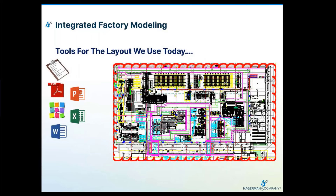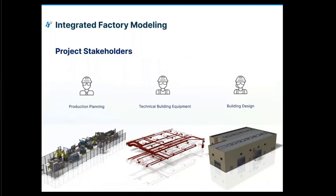Where we're at today, the tools we use for layouts are 2D — 2D prints in the shop, in the field, via email. We can use 3D PDFs, STEP files, SAT files, but those are not up to date — they're not live references back to the models. We still use Microsoft Word for inspection, paint, and maintenance manuals, handwritten notes, sticky notes, Excel for schedules, PowerPoint for presentations, as well as AutoCAD, Inventor 2D drawings, and Revit drawings.